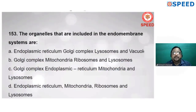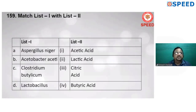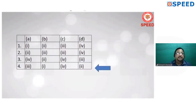The organelles included in the endomembrane system are the Golgi body, endoplasmic reticulum, lysosomes, and vacuoles. Next matching question — microbial products: Aspergillus niger produces citric acid; Lactobacillus produces lactic acid; Acetobacter produces acetic acid; Clostridium butylicum produces butyric acid. Answer: A3, B1. Alternate 4 is correct.